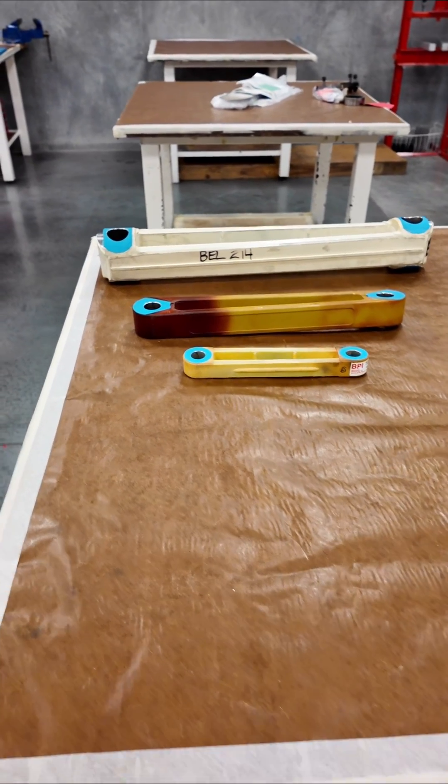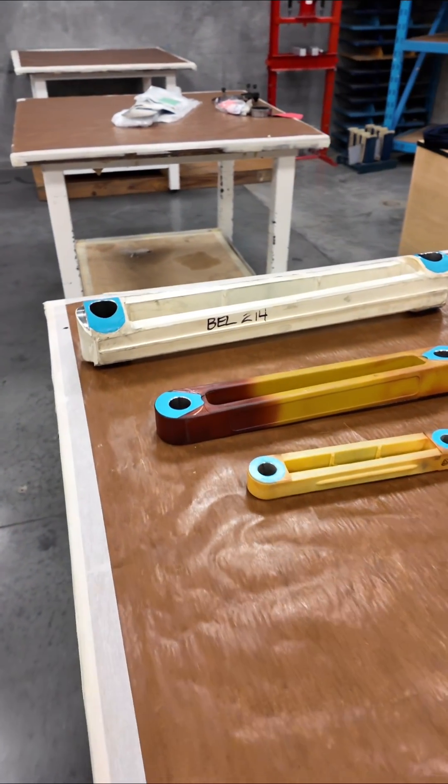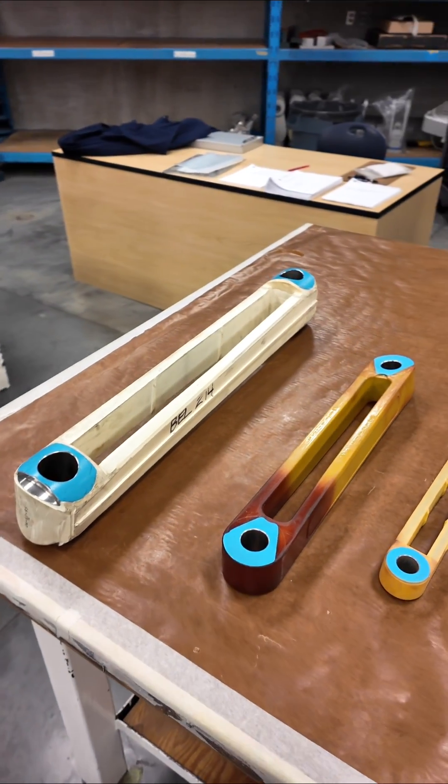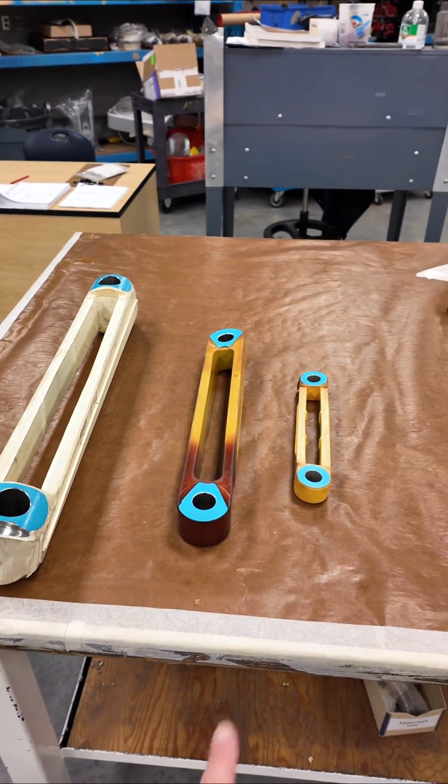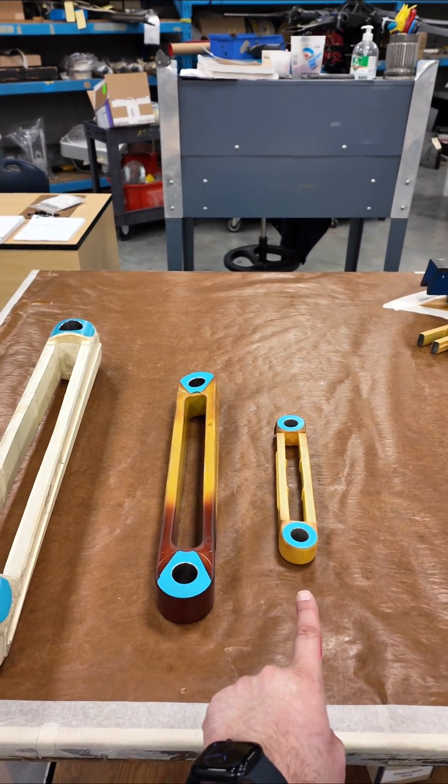This is three examples of tension torsion straps. These particular straps are used in Bell helicopters.